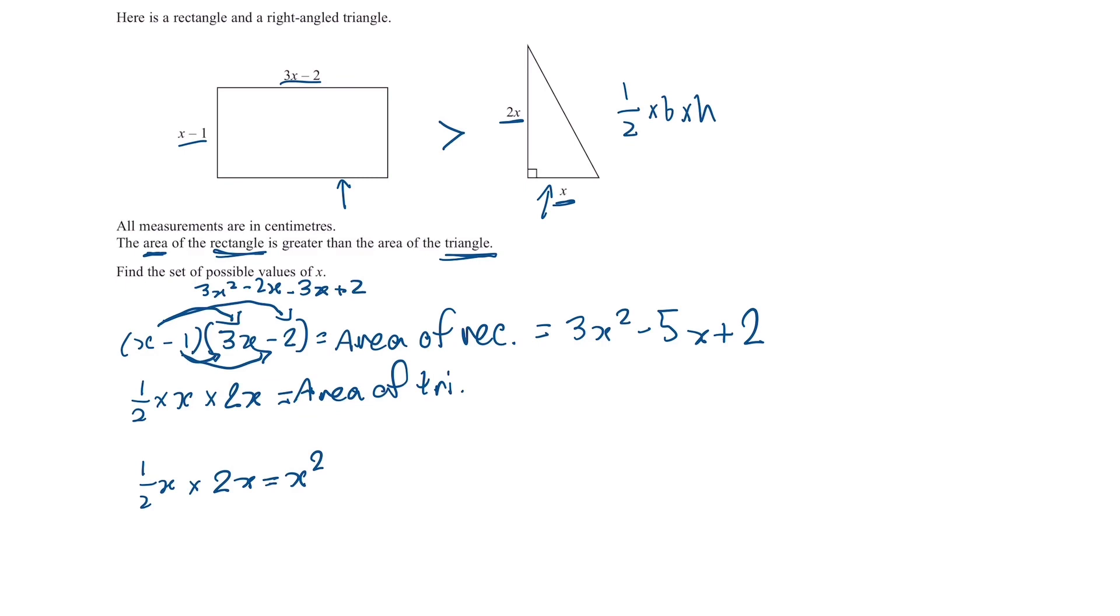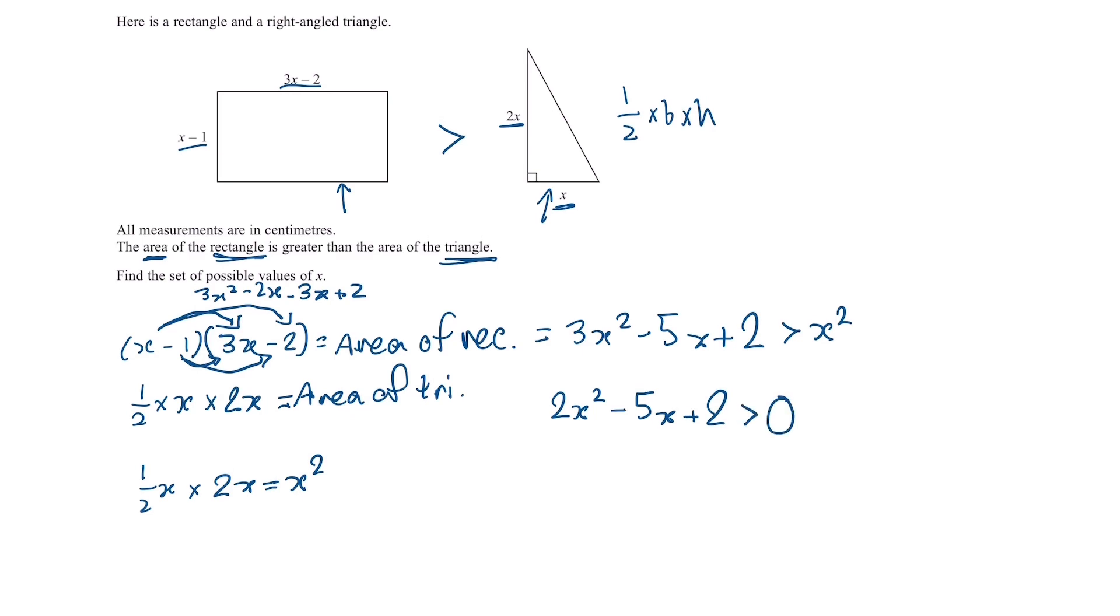Now we can use the fact that the area of the rectangle is greater than the area of the triangle. So the area of the rectangle which we can write algebraically as 3x squared minus 5x plus 2 is greater than the area of the triangle which is just x squared. So at this point we just have a quadratic inequality. So we just bring over the x squared to the other side leaving us with 2x squared minus 5x plus 2 is greater than 0.